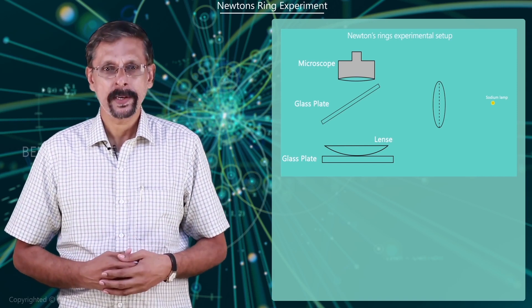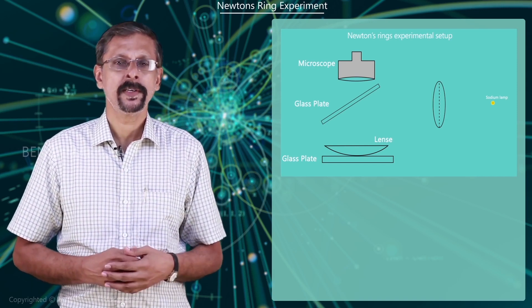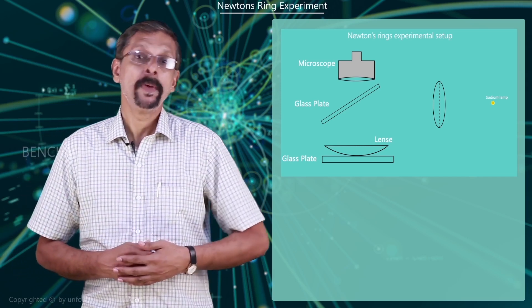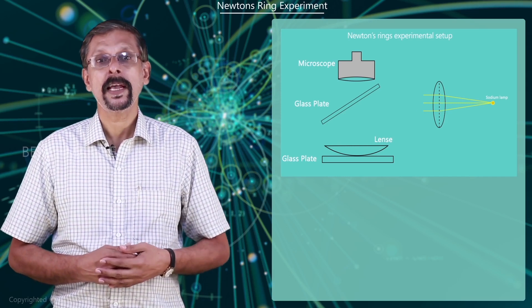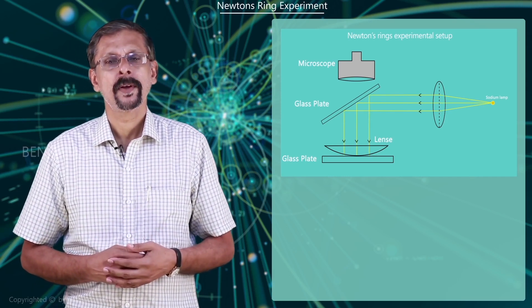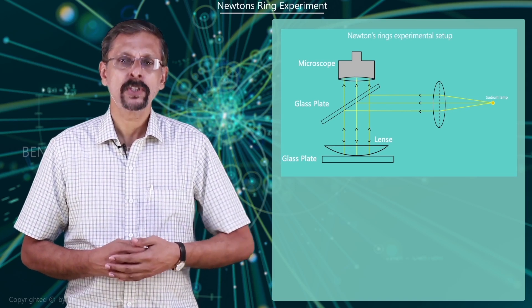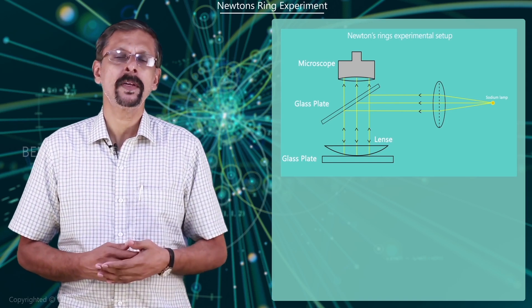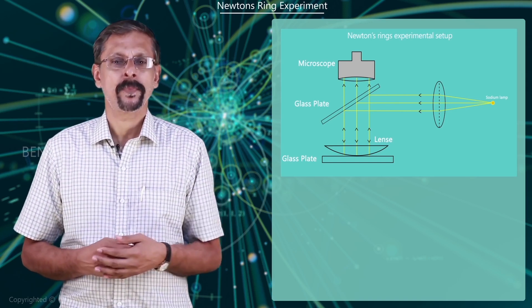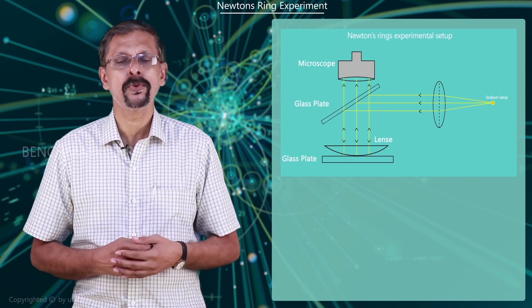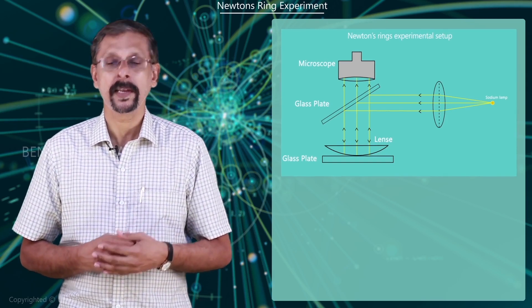A thin film of air is formed in between the convex surface and the plain glass plate. A beam of monochromatic light is allowed to fall normally on the lens and glass plate arrangement. Part of this light is reflected from the top of the air film and another part reflected from the bottom of the air film. These reflected beams superimpose, leading to bright and dark rings.